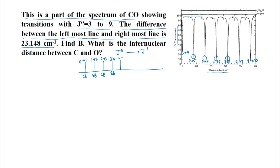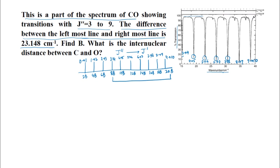Then we have lines: 4 to 5 at 10B, 5 to 6, 6 to 7, 7 to 8, 8 to 9, and 9 to 10. So these lines come at 12B, 14B, 16B, 18B, and 20B. In other words, the separation in wave numbers between the leftmost line and the rightmost line is 20B minus 8B, that is 12B. According to the problem, the difference between the leftmost line and the rightmost line is 23.148 centimeter inverse.